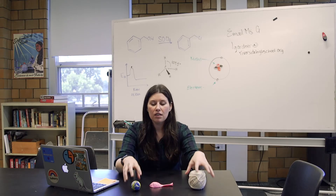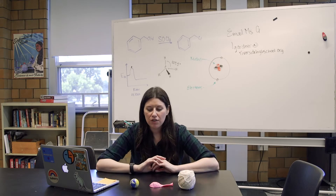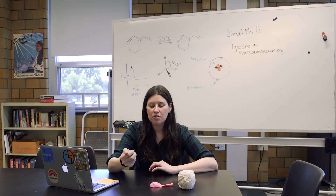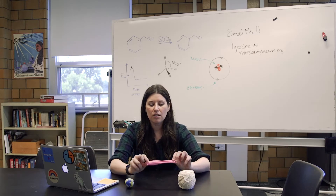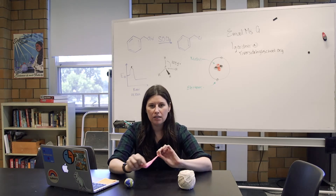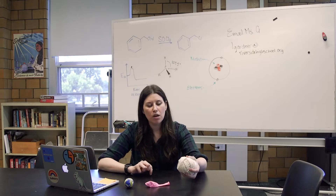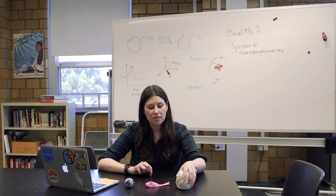Let's apply that to these three objects in front of me. I could describe this as round and kind of hard in texture. I have this balloon here that is pink in color and stretchy, or this ball of yarn that is soft and white.